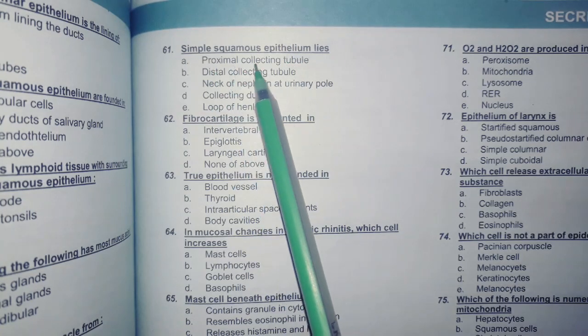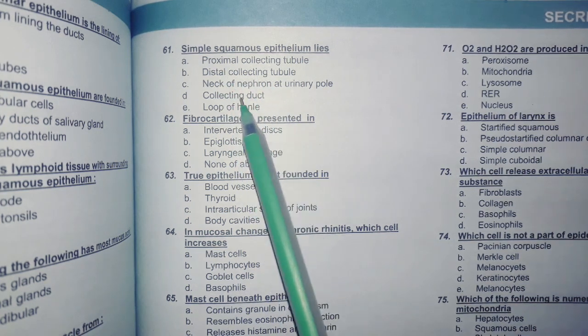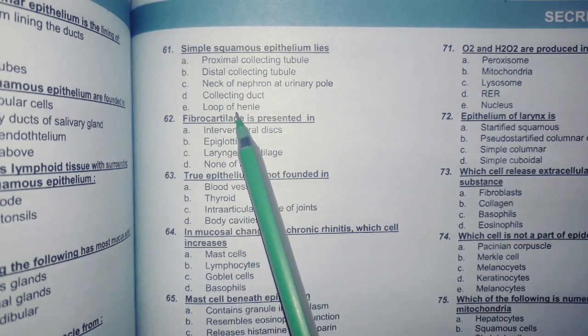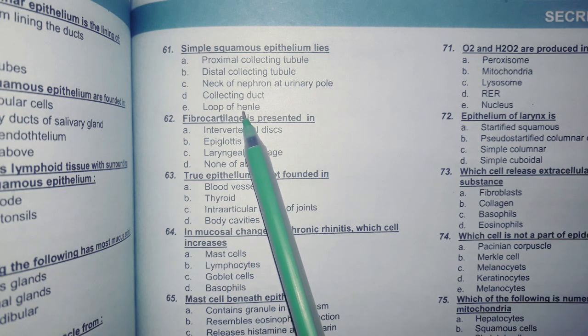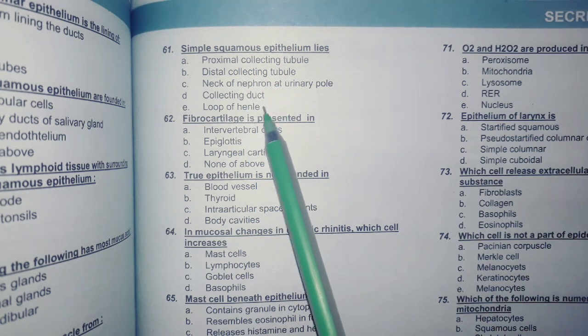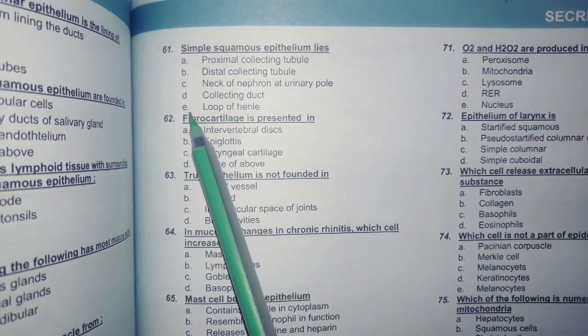The simple squamous epithelium lies in proximal convoluted proximal collected tubules, distal collected tubules, neck of nephron, collecting duct and loop of Henle. So as we know in the kidney two areas we can squeeze like Bowman capsule, in the Bowman capsule the loop of Henle is same like Bowman capsule. So the answer is E.